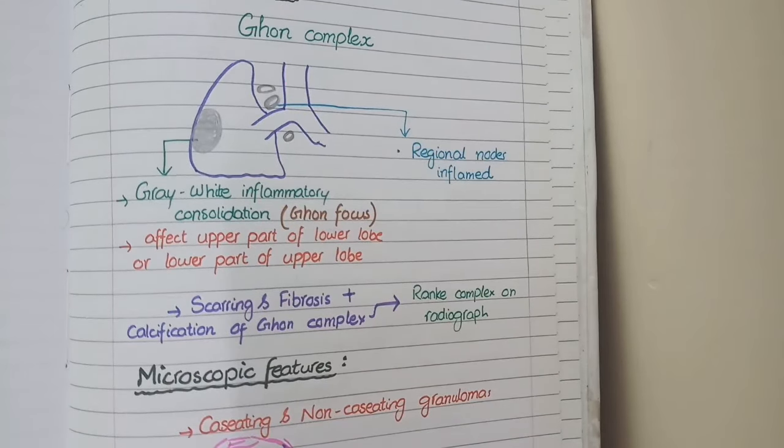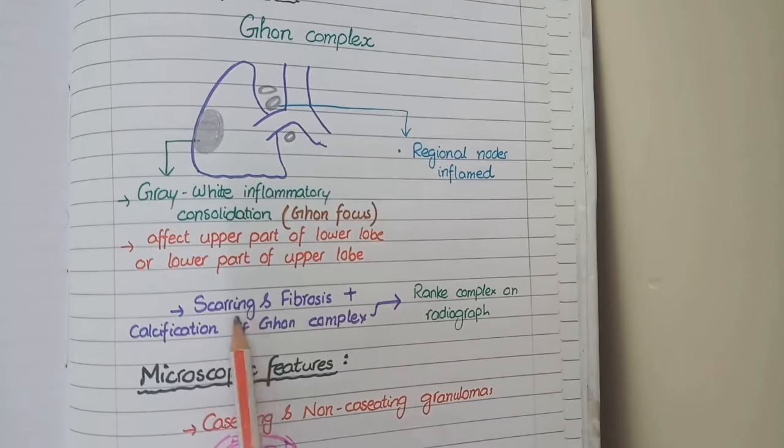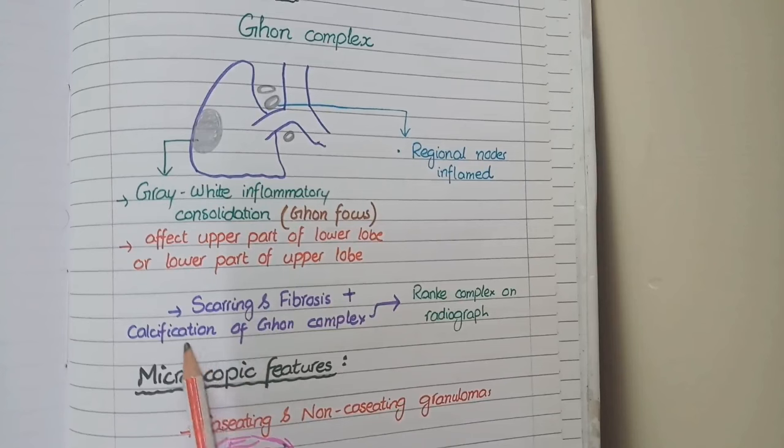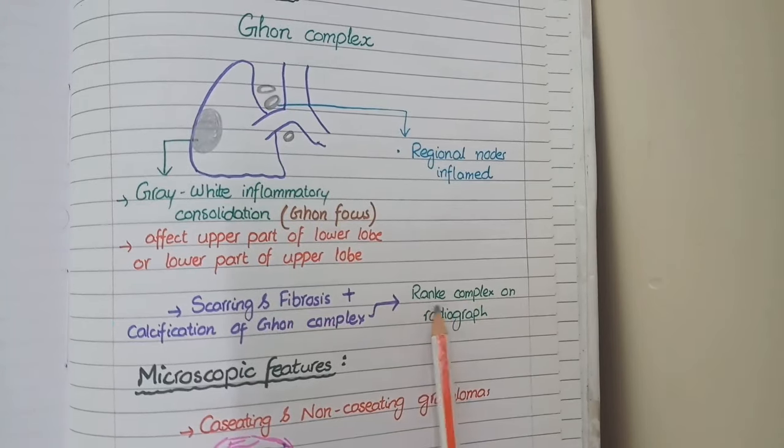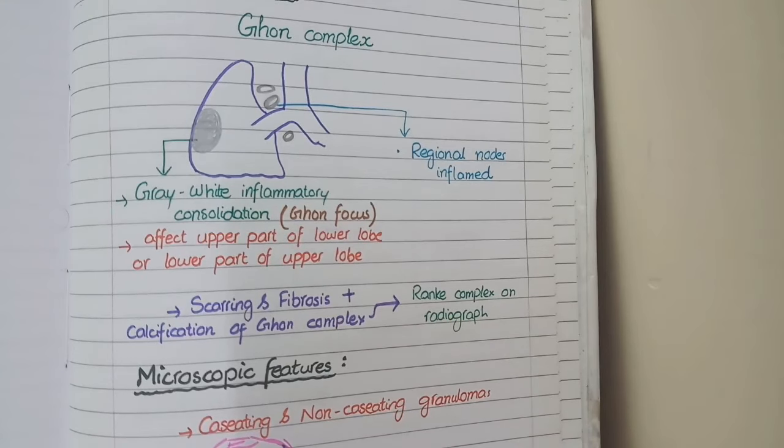Now here is an additional point that in more chronic cases of tuberculosis, the Ghon complex undergoes fibrosis and these fibrotic areas undergo calcification. These calcified lesions are known as Ranke complex and they are visible on radiographs.